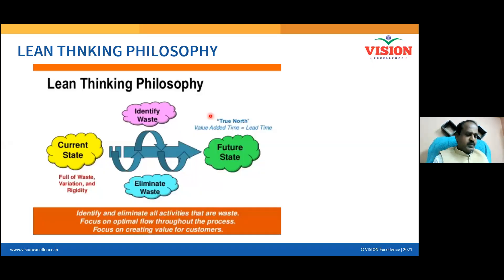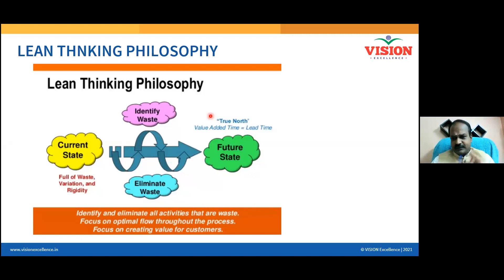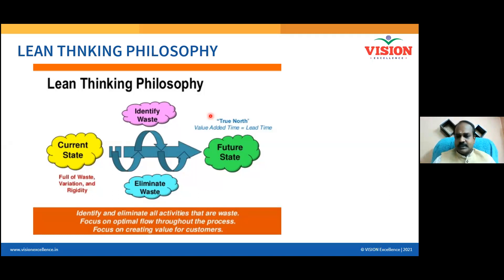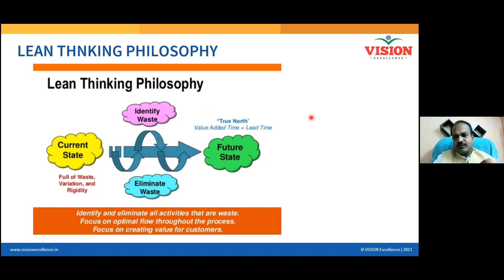We have covered Define, Measure, Analyze, Improve, and Control. We've done Define and Measure, so you have an idea about the objectives of each phase, the deliverables, and the key steps and tools inside each phase. Now let us understand Lean a little deeper.